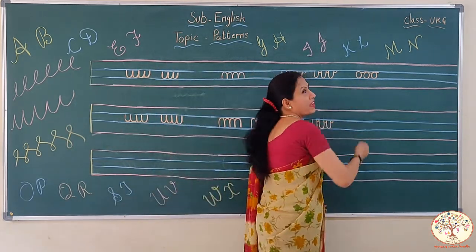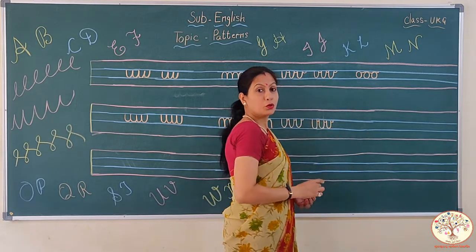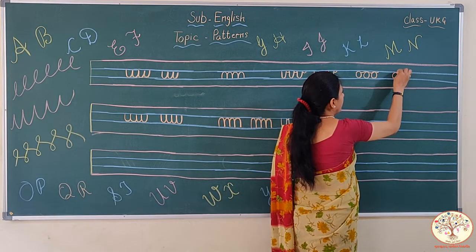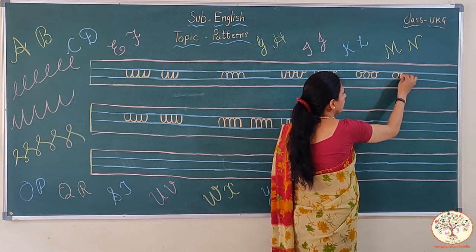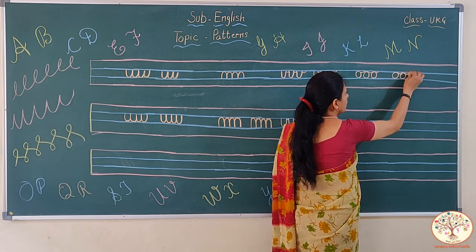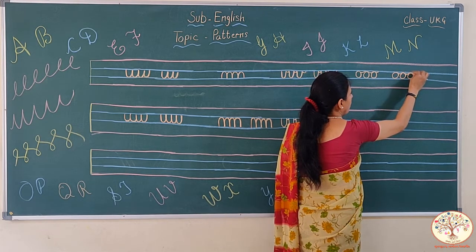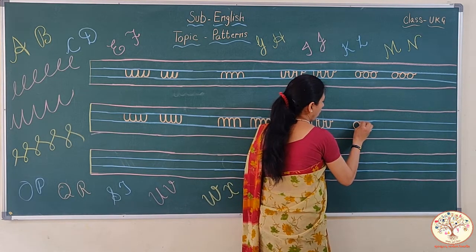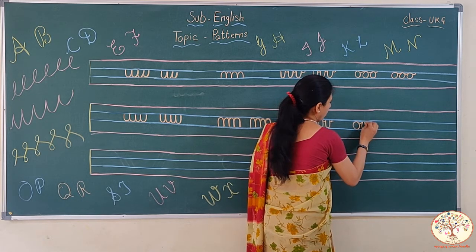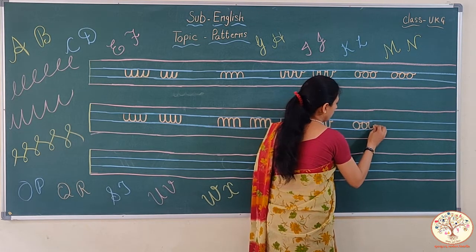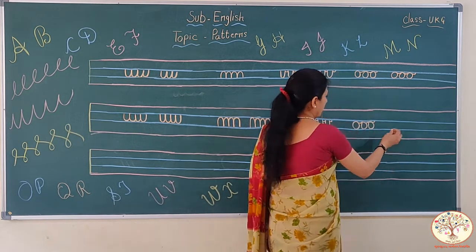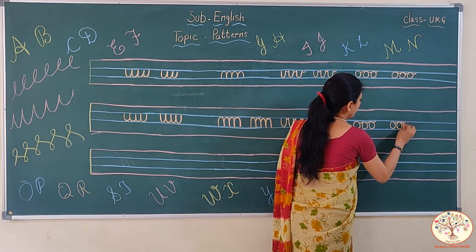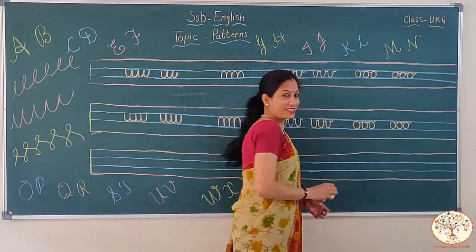Which pattern is this? Very easy — you know how to make small O. Small O, and then again a small loop. Small O, small loop on the upside, O, and this. Once again: O, O, small turn, O, O, small turn, O, small turn. O, small turn, O, curl, O, and curl. Isn't it very easy?